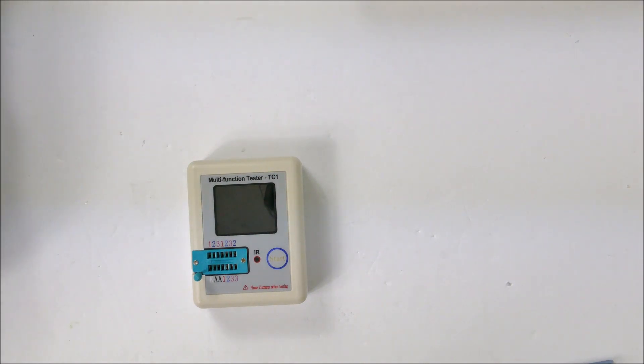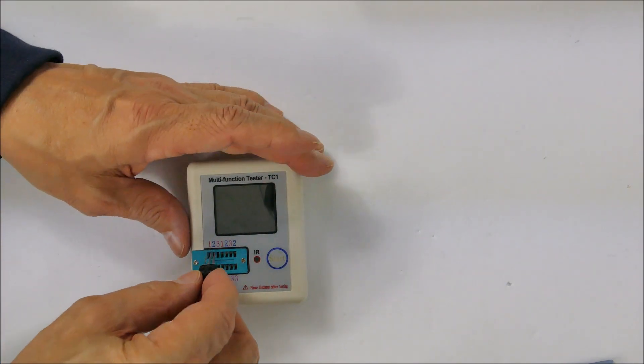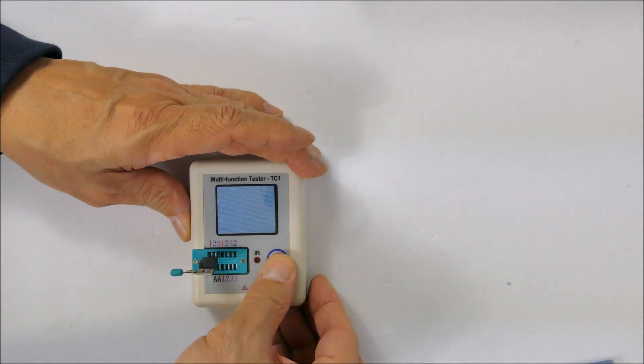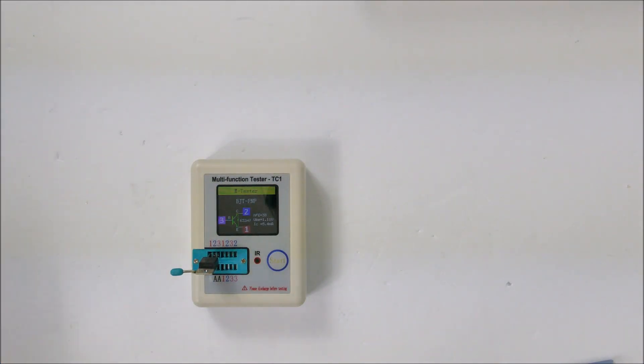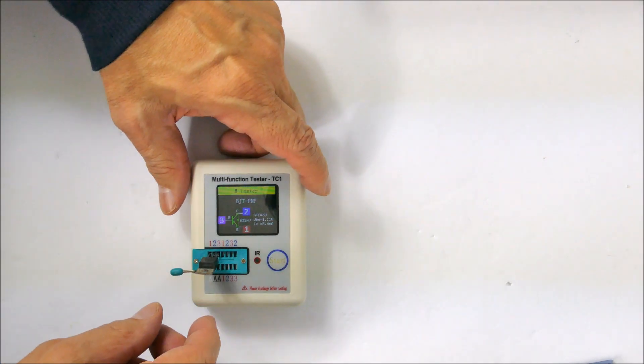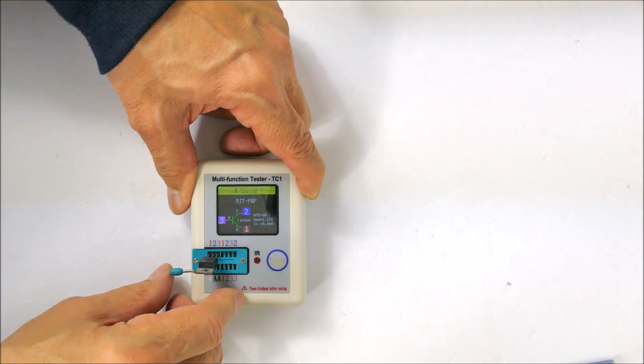It's pretty amazing that this little tester can automatically figure out what each device is. I have here a transistor of some sort, TO-220. It's saying this is a bipolar transistor, a PNP. It's got an HFE of 38, so a gain of 38, and the base-emitter voltage is 1.1 volts at a current of 5.4 milliamps.